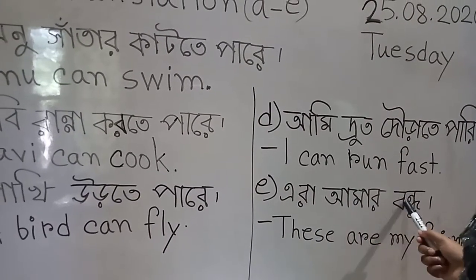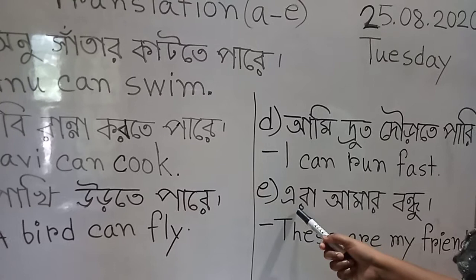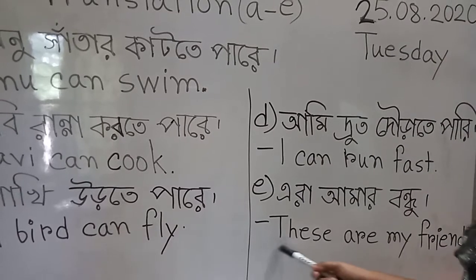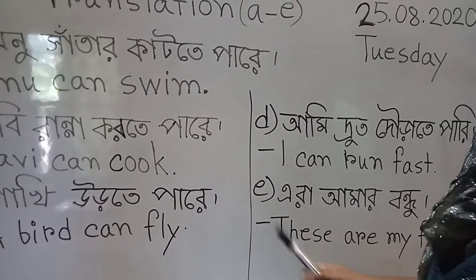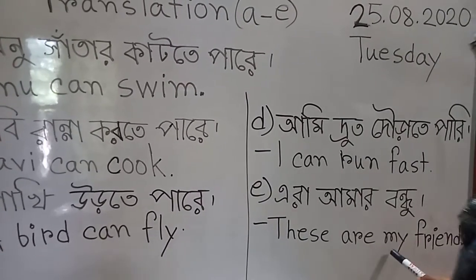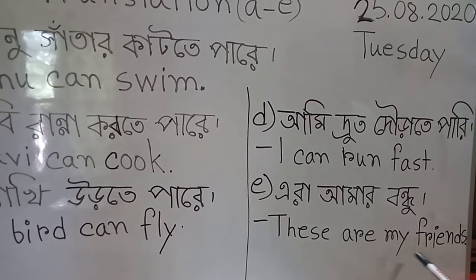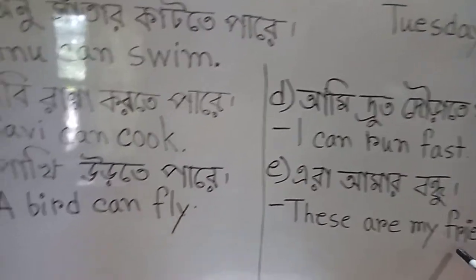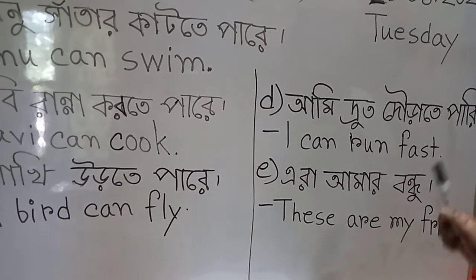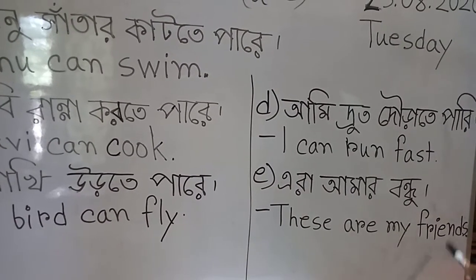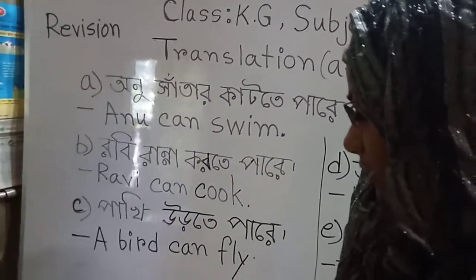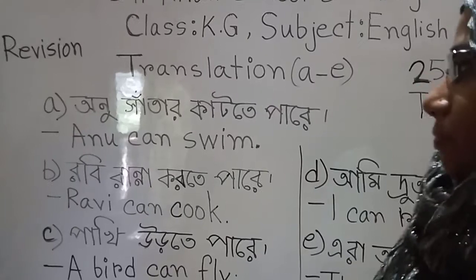Era amar bondhu. What will be the sentence in English? T-H-E-S-E — these, means 'era'. A-R-E. M-Y — my, means 'amar'. F-R-I-E-N-D-S — friends, means 'bondhu'. So the sentence is: These are my friends. These are all the sentences we used in our translation.